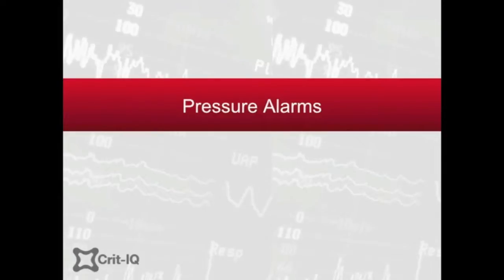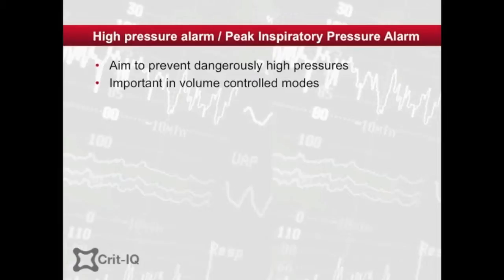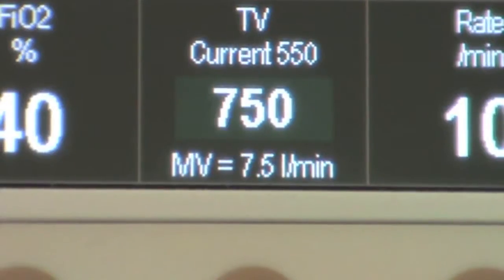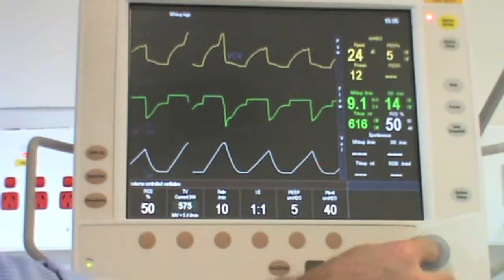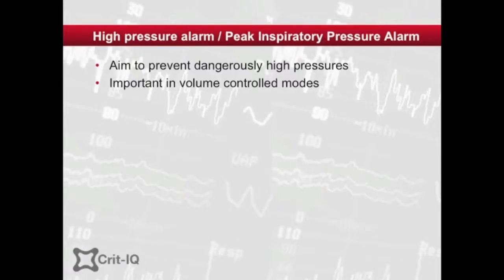Two of the most important alarms on the ventilator are the low and high pressure alarms. The aim of the high pressure alarm is to detect and prevent dangerously high peak pressures, with the intention of minimising pressure-related lung injury. This is of most relevance in volume-regulated modes of ventilation, where the pressure generated is dependent on the volume selected and the resistance of the circuit and airways. Pressure-controlled modes, by definition, are limited to the inspiratory pressure set.